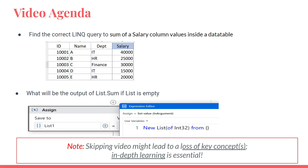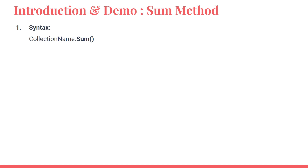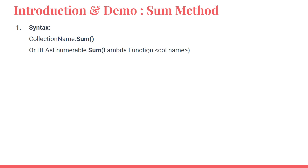Let's get started with the introduction and demo of the sum method. The syntax is quite simple — you take the collection name. The collection name could be a data table, array, or list. If it is a data table, it is slightly different — you have to use a lambda function and specify the column name upon which you would like to apply the sum method.